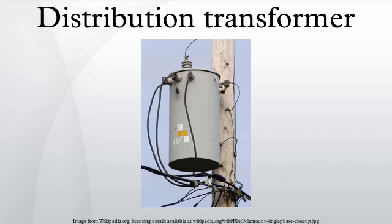Transformers providing three-phase secondary power, which are used for residential service in the European system, have three primary windings and are attached to all three primary phase wires. The windings are almost always connected in a Y configuration, with the ends of the three windings connected and grounded. The transformer is always connected to the primary distribution lines through protective fuses and disconnect switches. For pole-mounted transformers this usually takes the form of a fused cut-out. An electrical fault causes the fuse to melt, and the device drops open to give a visual indication of trouble. It can also be manually opened while the line is energized by line workers using insulated hot sticks.